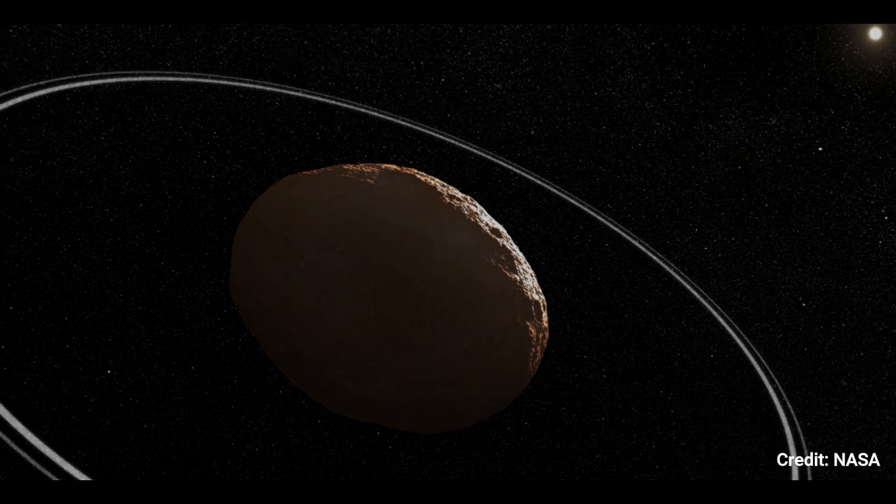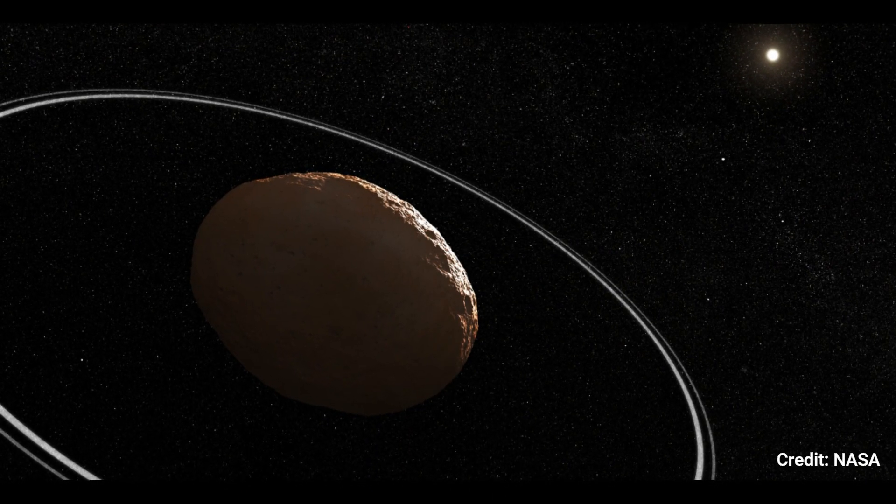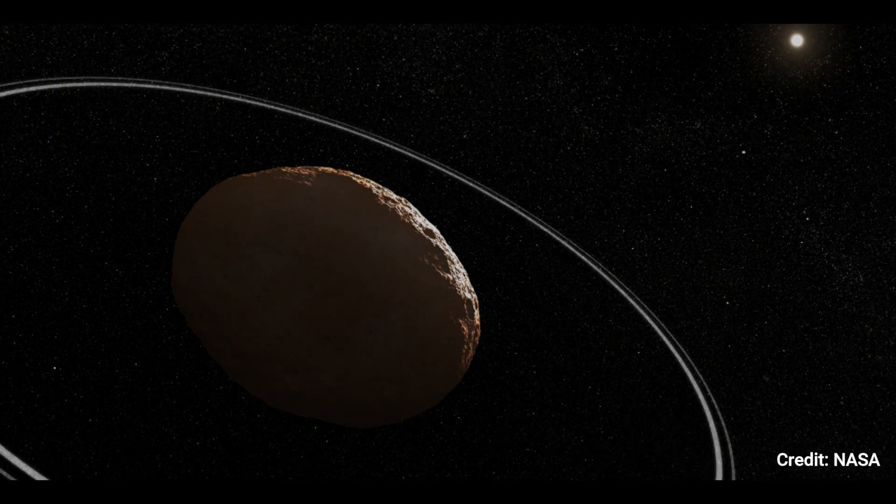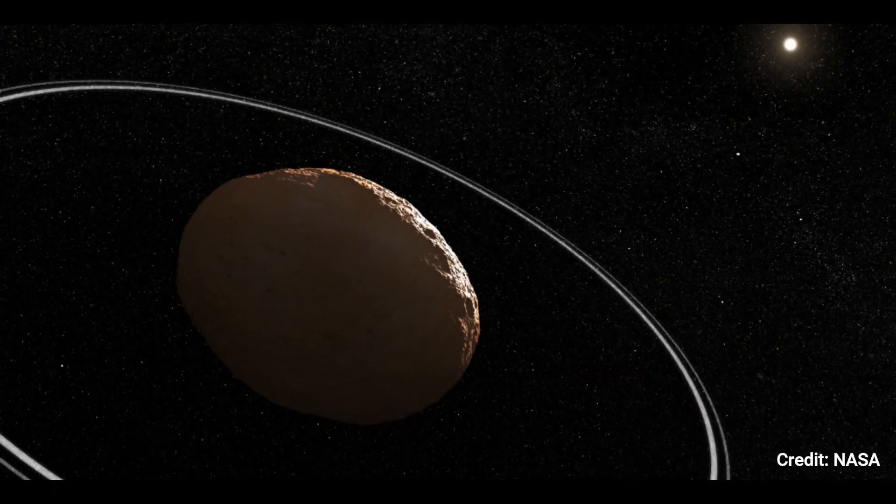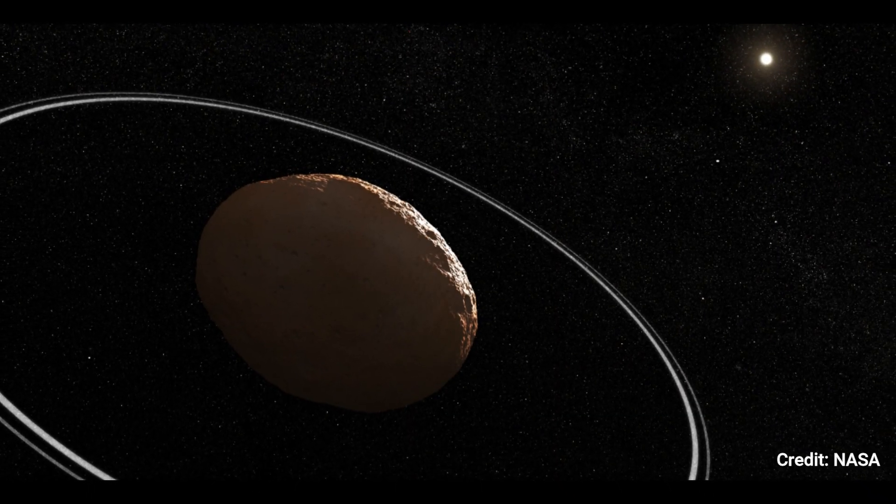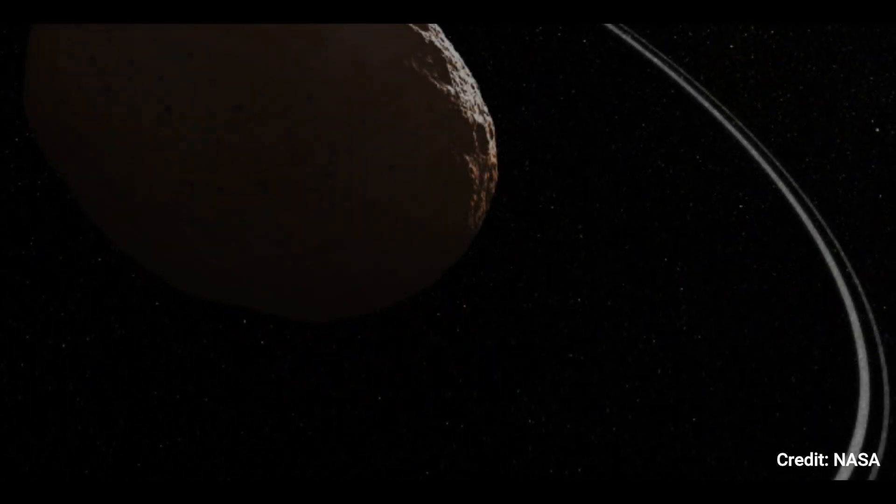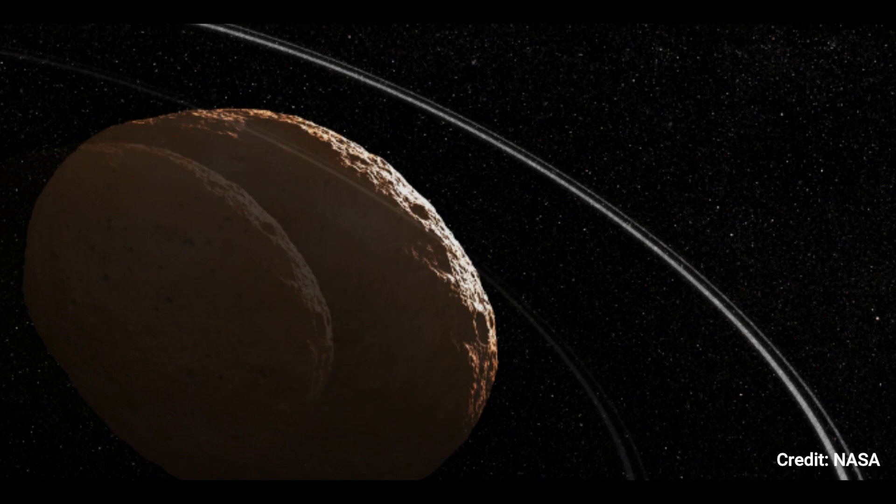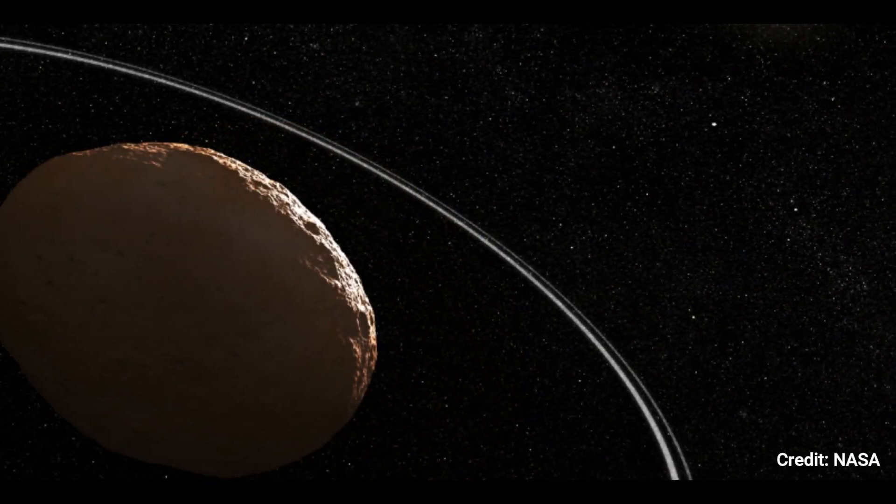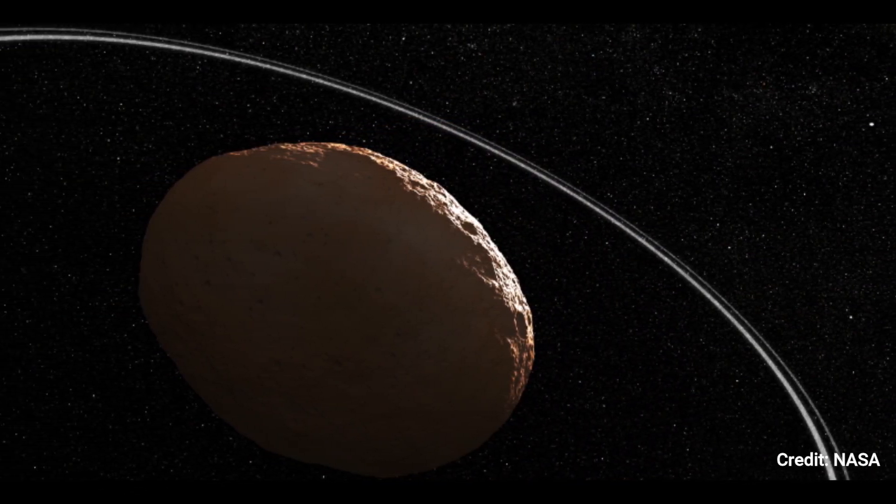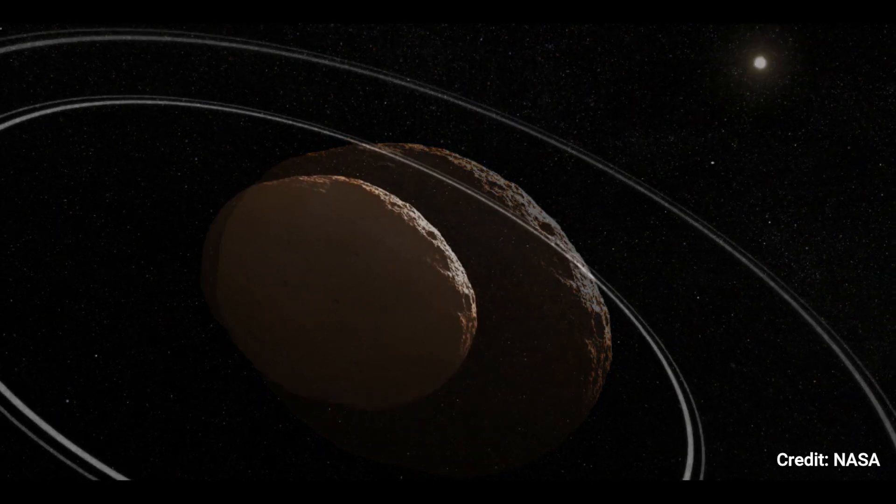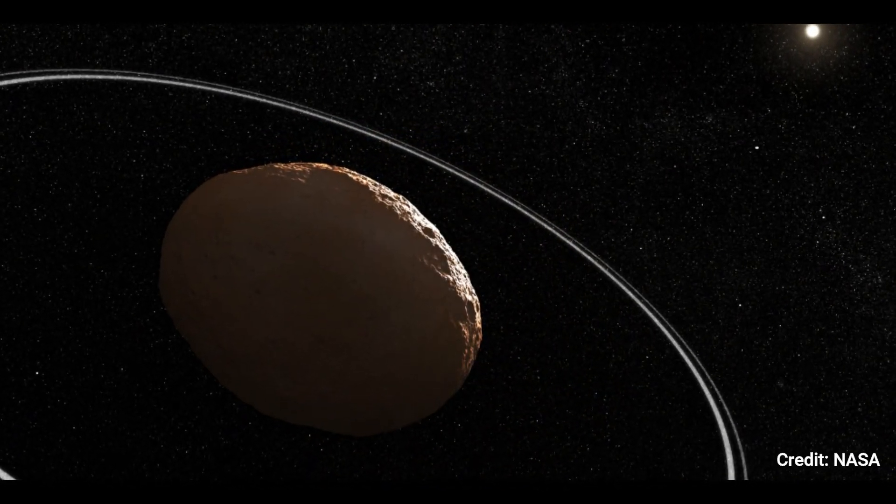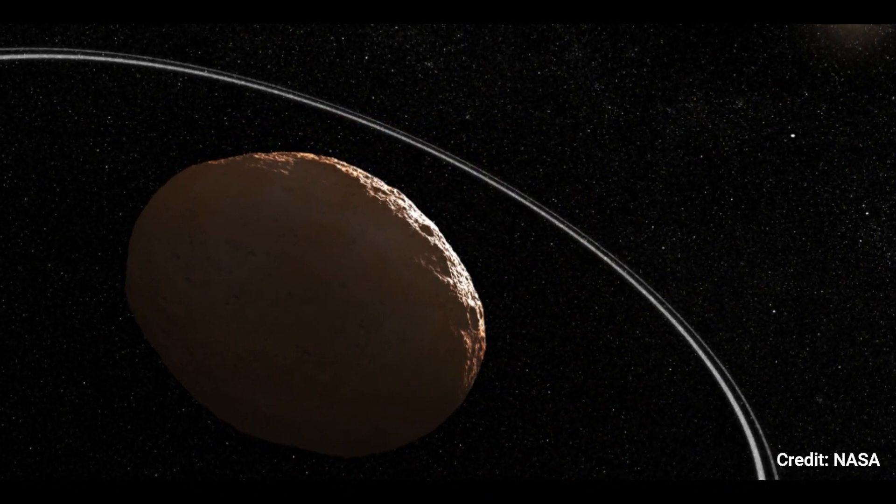Chariklo is only 160 miles, 250 kilometers, across, approximately 1/50th the size of Earth, and its rings circle at a distance of around 250 miles, 400 kilometers, from the body's core. This illustration is based on Chariklo's earlier observations. Webb did not photograph Chariklo directly, but he did observe an occultation event in which Chariklo's rings crossed in front of a background star.